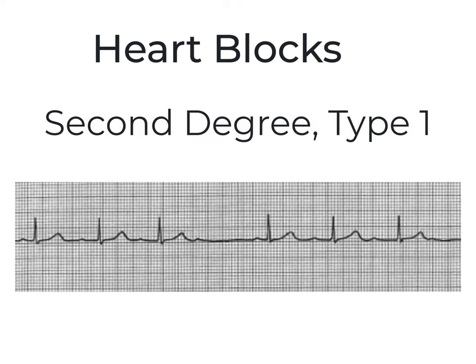In a second degree type 1 block, the PR interval gradually lengthens until a QRS is dropped, and then the pattern repeats — longer, longer, longer, dropped. And this is the one that's also called a Wenckebach block.